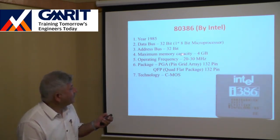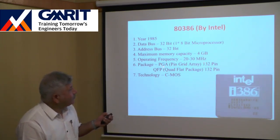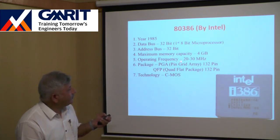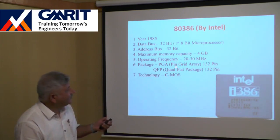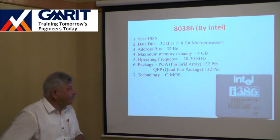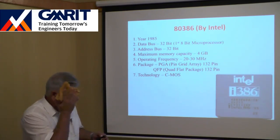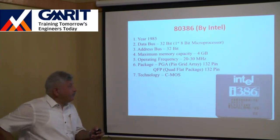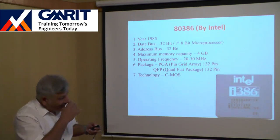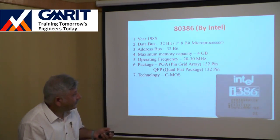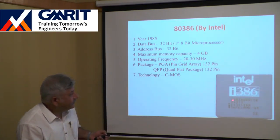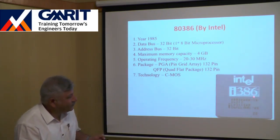The 80386 used PGA and QFP packages, with pin counts increased to 132 for both. The technology changed to CMOS — complementary MOSFET — which reduces power consumption by using both NMOS and PMOS to implement logic. Intel launched it as the 80386 DX, and also in a cheaper SX version.